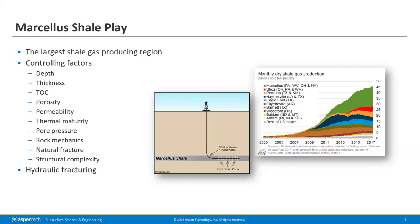There are a number of controlling factors on the success of wells in this region: depth, thickness, TOC, porosity, permeability, and a number of other things. But one of the most critical things that determines the effectiveness of the hydraulic stimulation is the thickness of the carbonates above and below the shale layers being fracked. The thicker the carbonates, generally the greater the stress barrier, negatively impacting fracture growth from hydraulic stimulation.